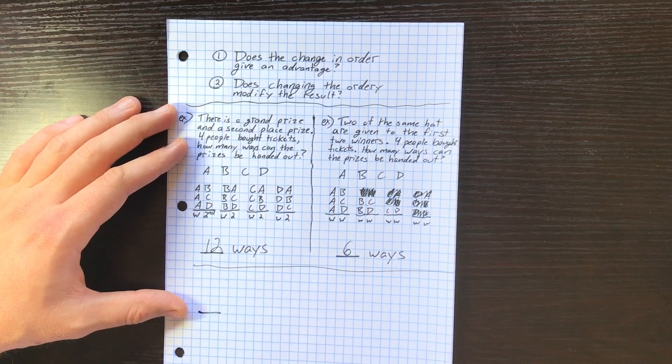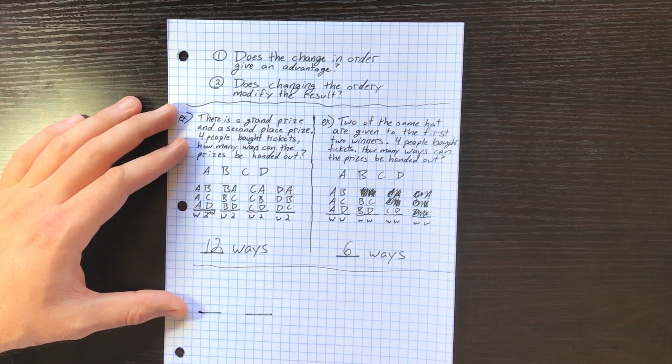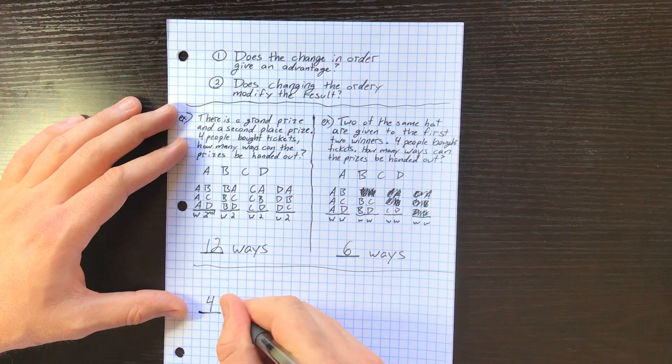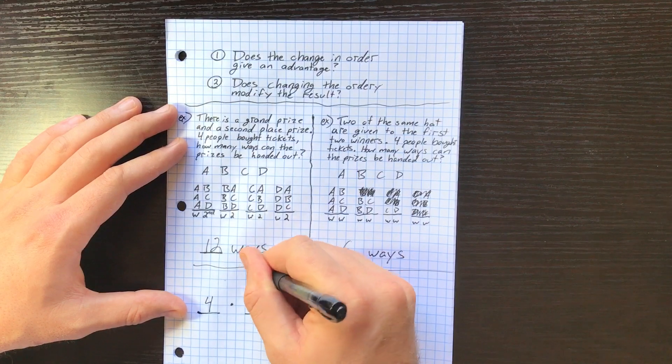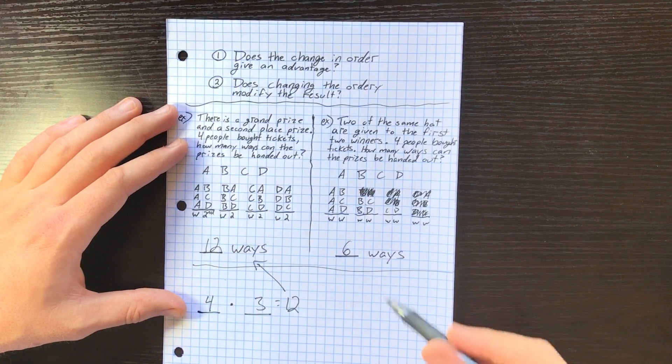With permutations, it's really easy. We know that we're gonna have a winner and we're going to have a second place. Four people can potentially win, three people could potentially win second place. And that's our 12 right there.